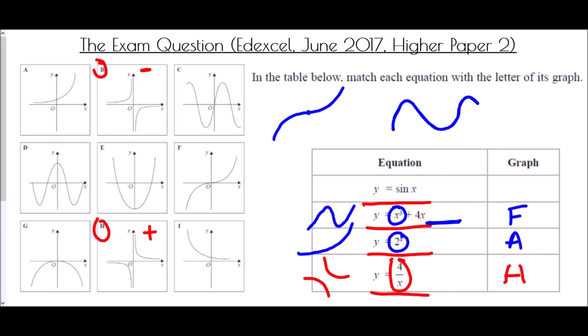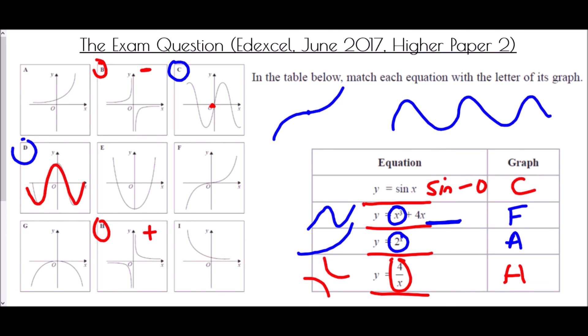Lastly, y equals sine x is a wave, so it is either C or D. The key point is that sine starts at zero — sine of zero equals zero — so C is the sine graph. The remaining graph D would be a cosine graph, because it does not begin at zero.